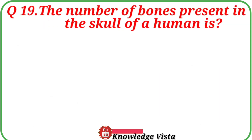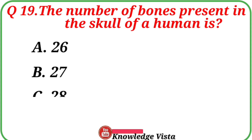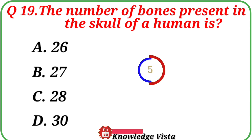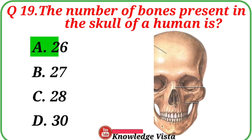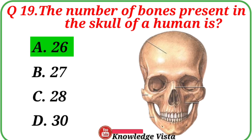Question number 19: The number of bones present in the skull of a human is. Your options are: A. 26, B. 27, C. 28, D. 30. Correct answer is option A, 26. The number of bones present in the human skull is 26.